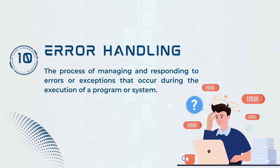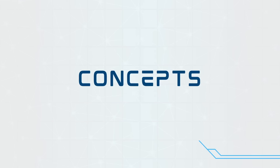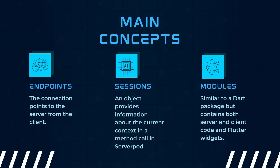The last capability is error handling — the process of managing and responding to errors or exceptions that occur during the execution of a program or system. In ServerPod, there are three main concepts to keep in mind when creating our application. First, endpoints, which refer to the connection points between the server and the client. We'll have one main project containing our server code, our Flutter application, and the auto-generated client code, which acts as middleware between them. Endpoints are what will be used to communicate between these three entities. Another concept is sessions — the session object provides information about the current context in a method call, and every call will have a session passed.